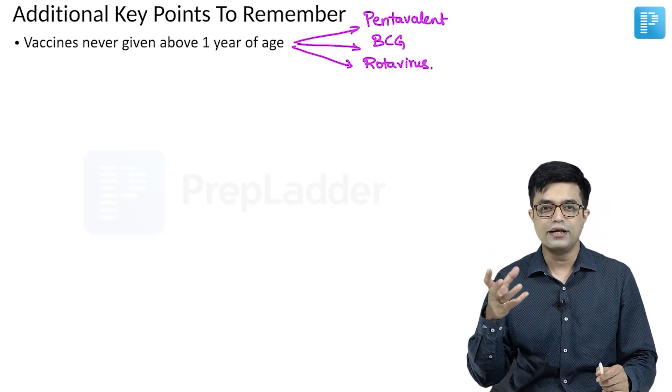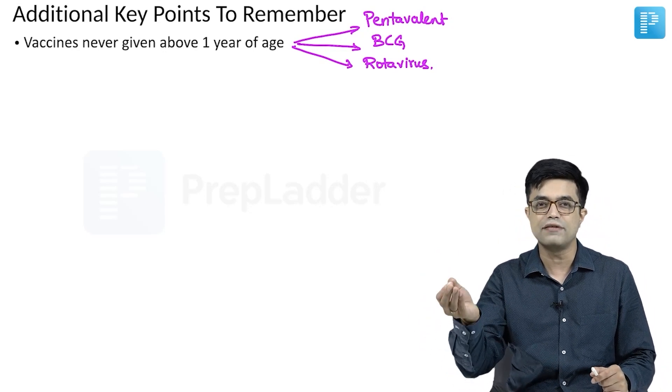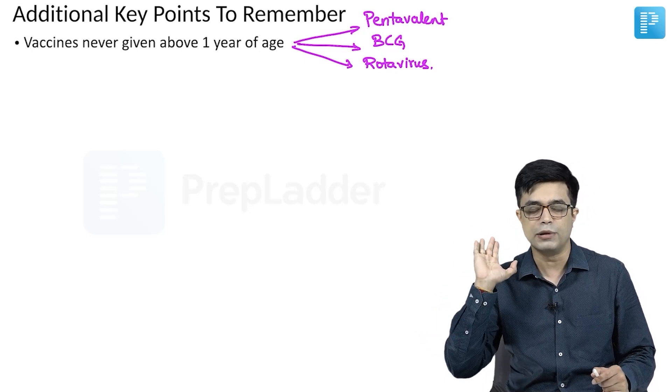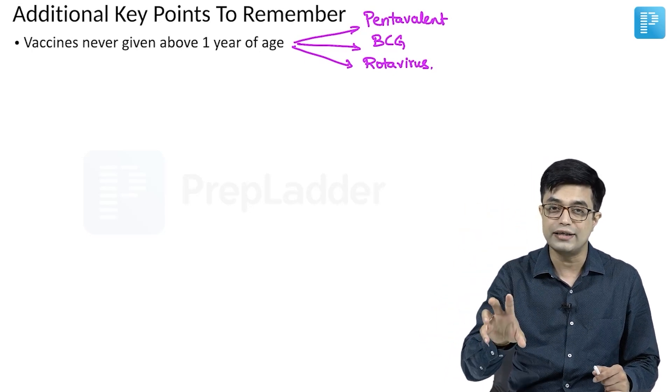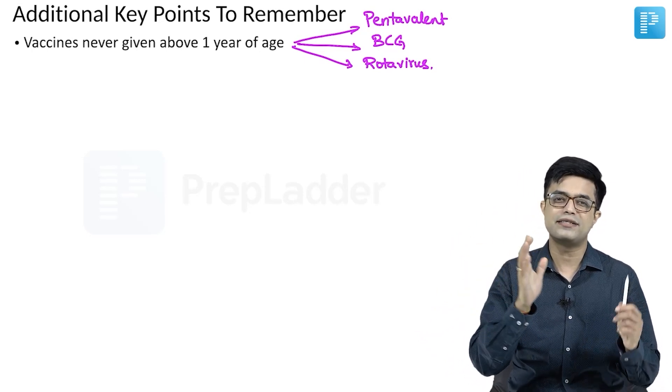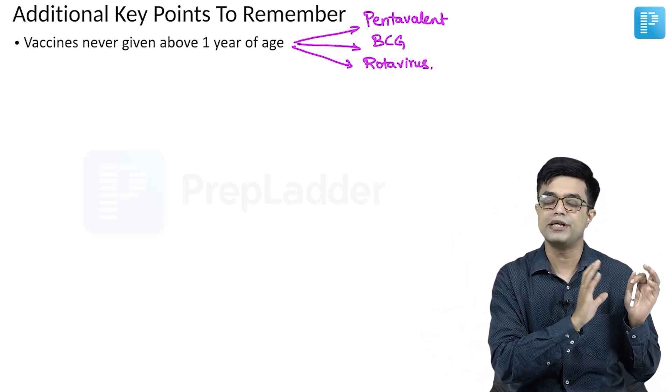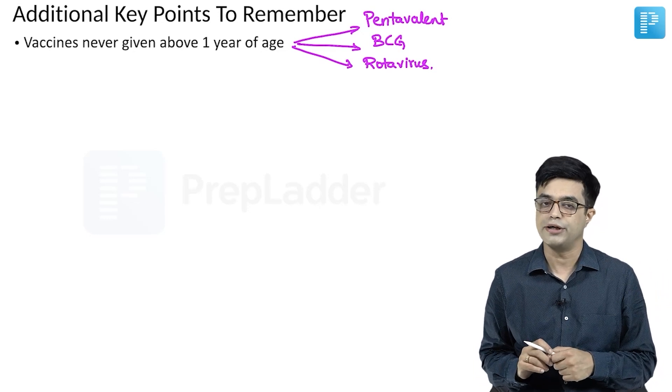If the question asks is hepatitis B given after one year of age, the answer will be no. But is it contraindicated? The answer is it is not contraindicated. It is just that it is not given above one year of age as part of the national immunization schedule.